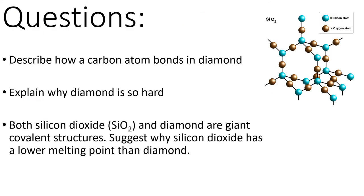Three quick questions for you. First, describe how a carbon atom bonds in diamond. Second, explain why diamond is so hard. And three, both silicon dioxide and diamond are giant covalent structures - suggest why silicon dioxide has a lower melting point than diamond. This last one is very difficult. A hint: look at the number of bonds that each atom is forming. Pause the video and give yourself about five to ten minutes on this.